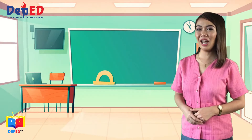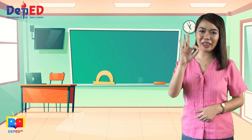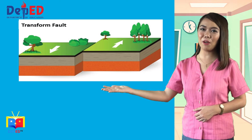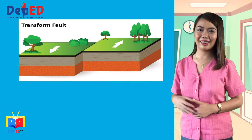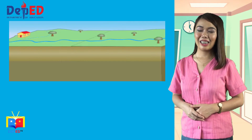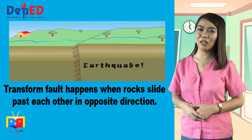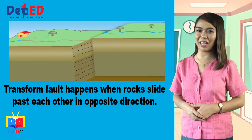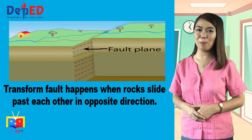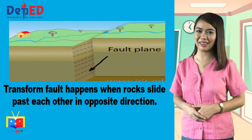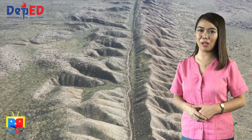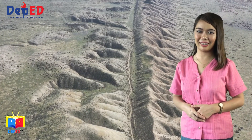We are now down to the third type of fault, which is transform fault. Transform fault happens when rocks slide past each other in opposite directions. The Amya's fault is an example of this.